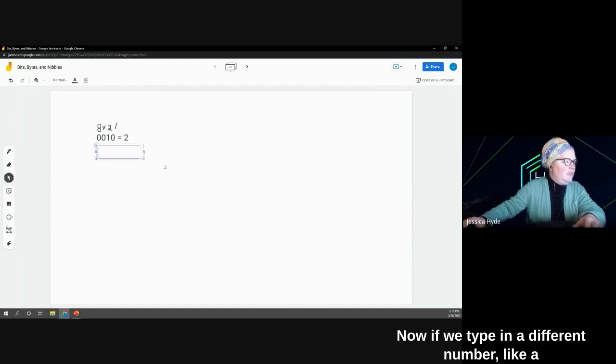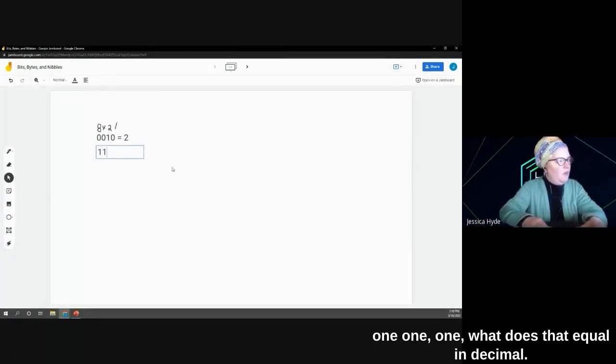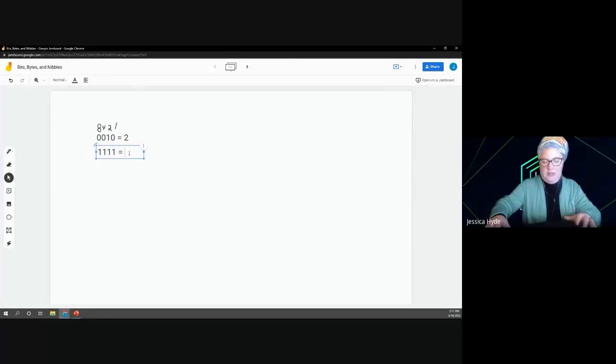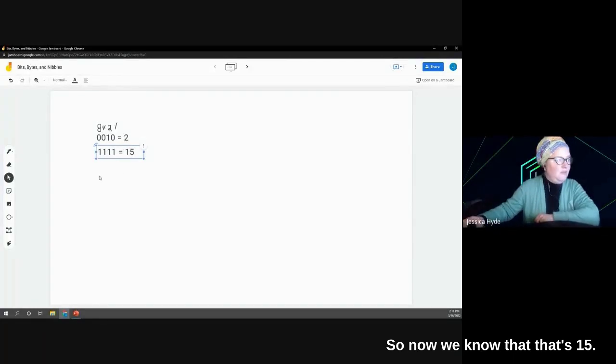Now, if we type in a different number, like 1, 1, 1, 1, what does that equal in decimal? Well, 8 and 4 is 12, and 2 is 14, and 1 is 15. So now we know that that's 15.